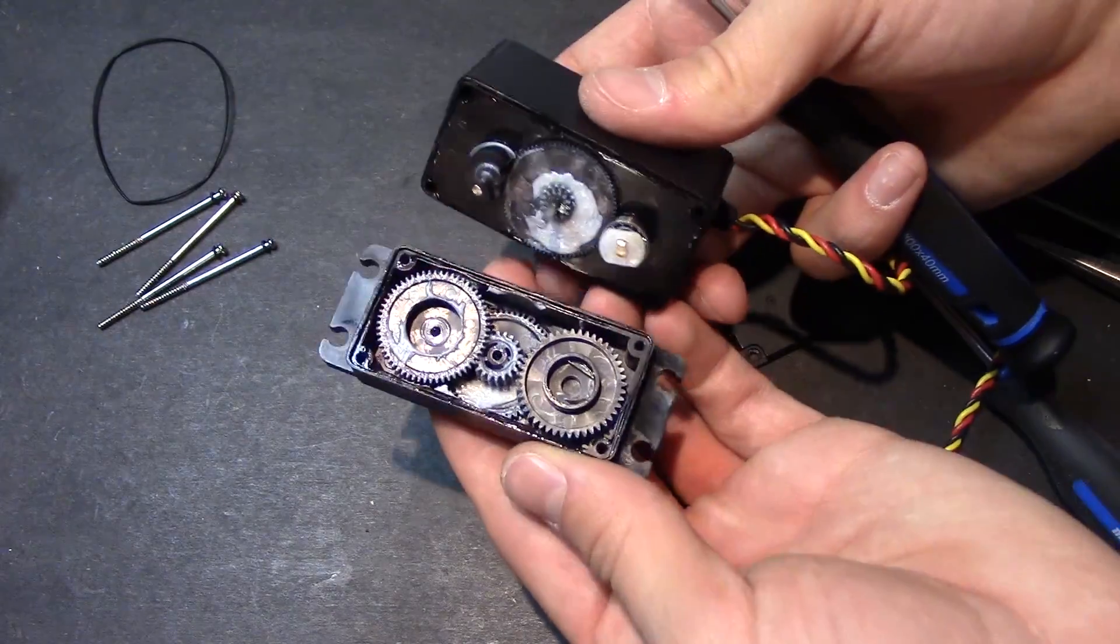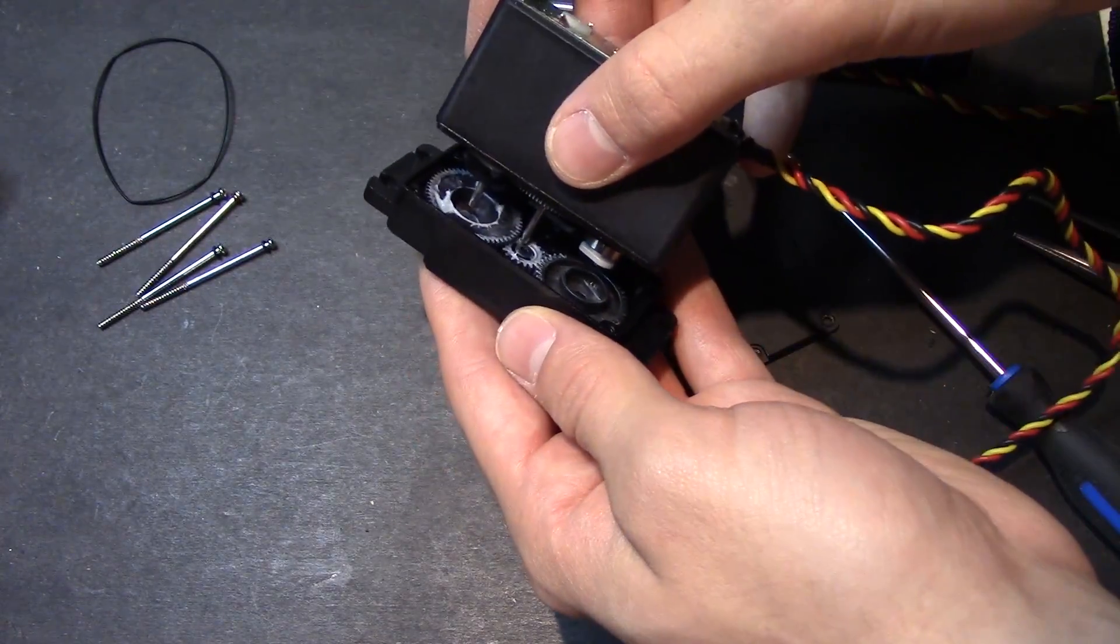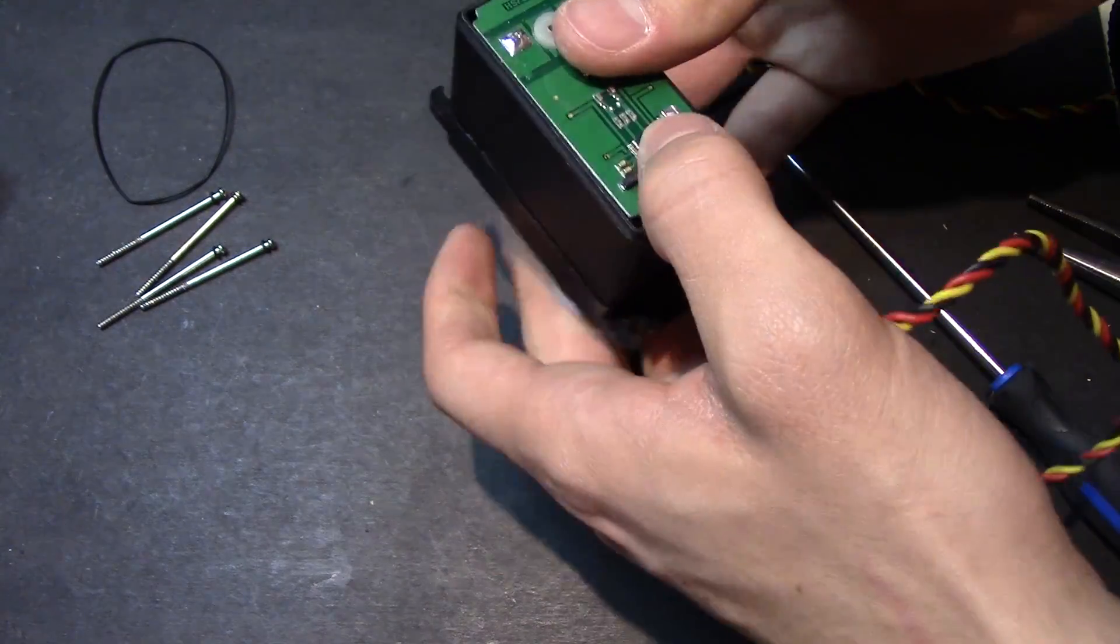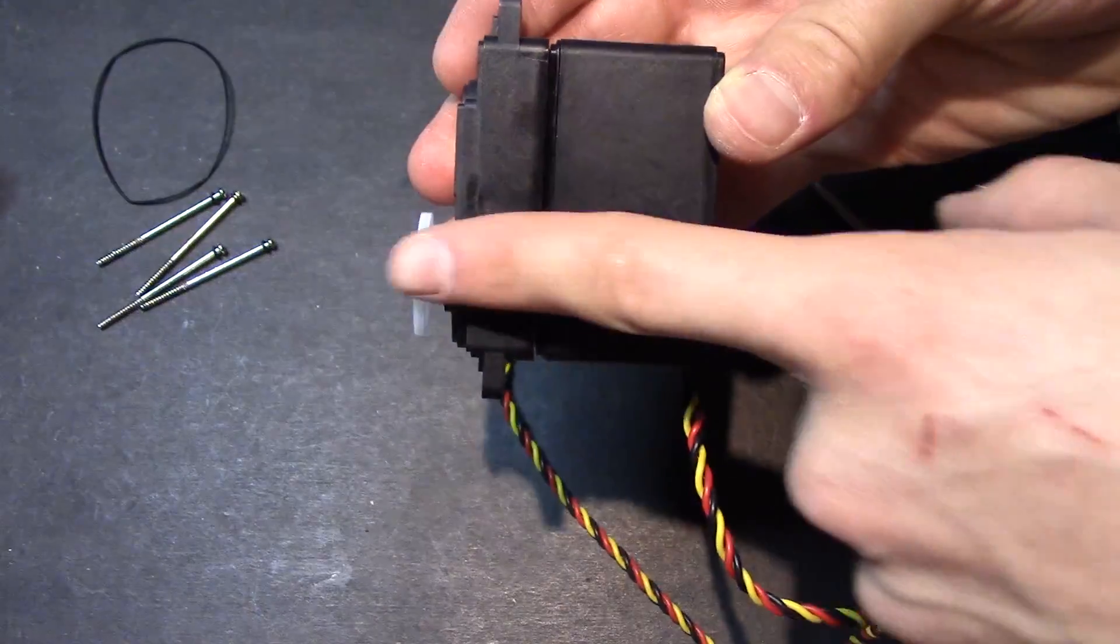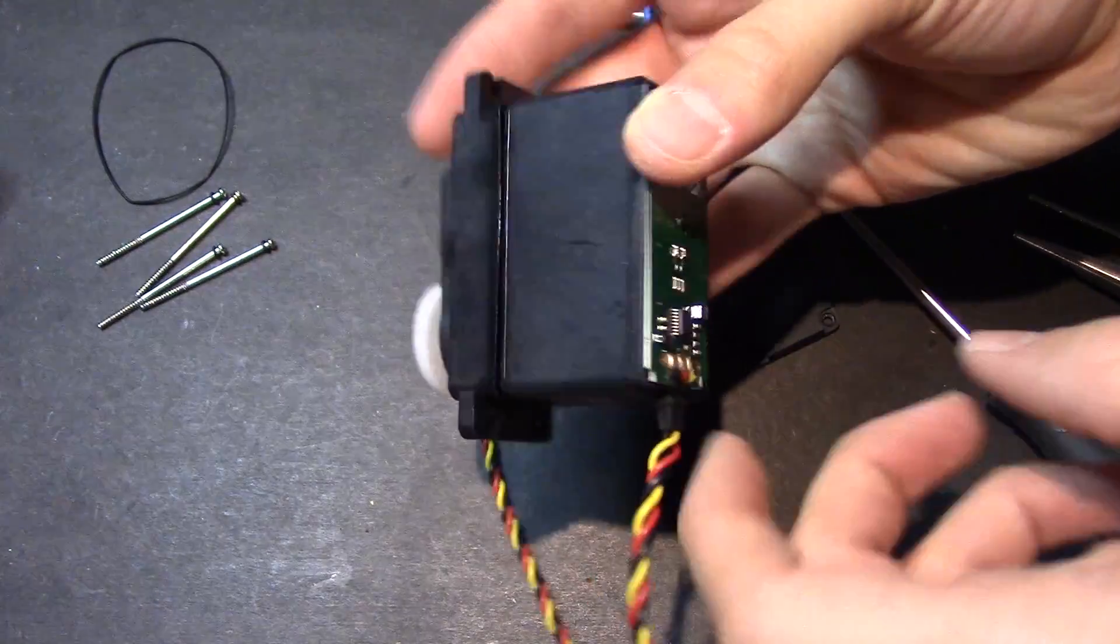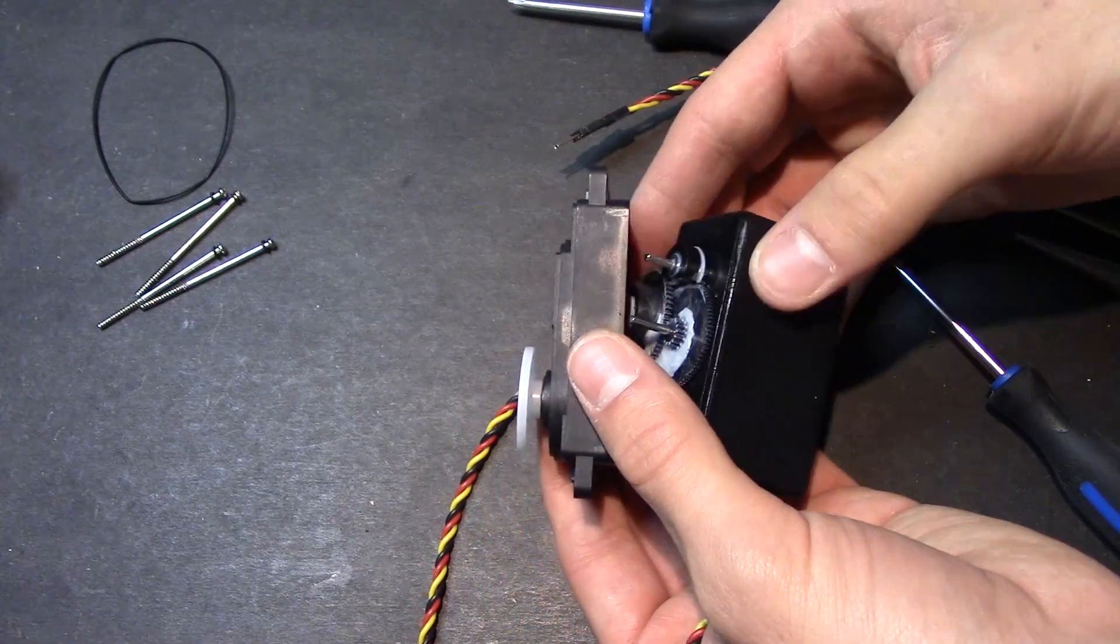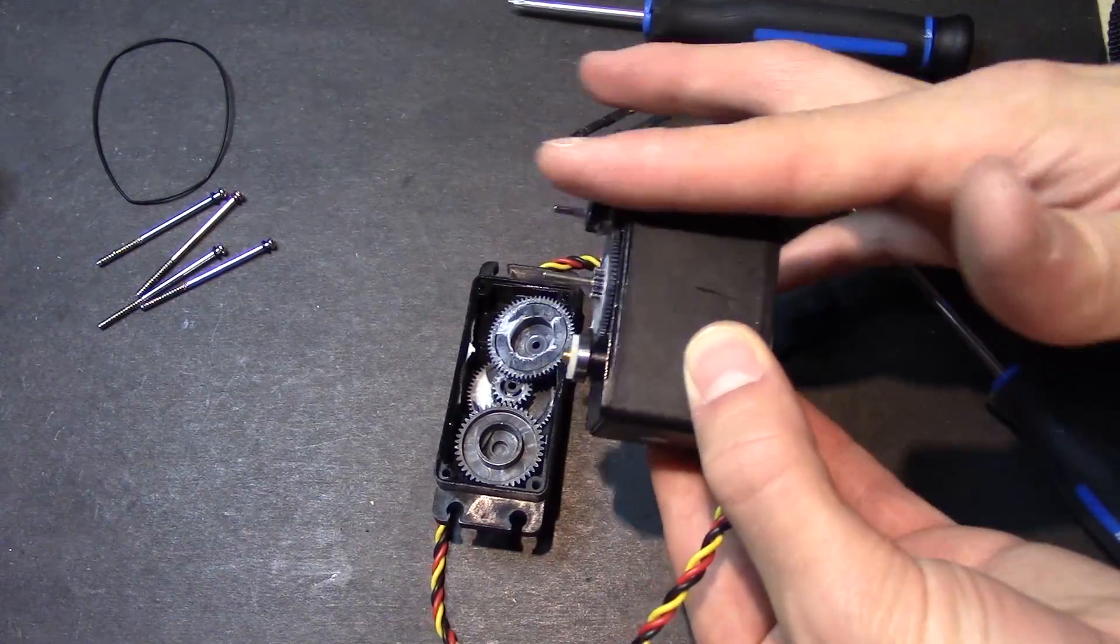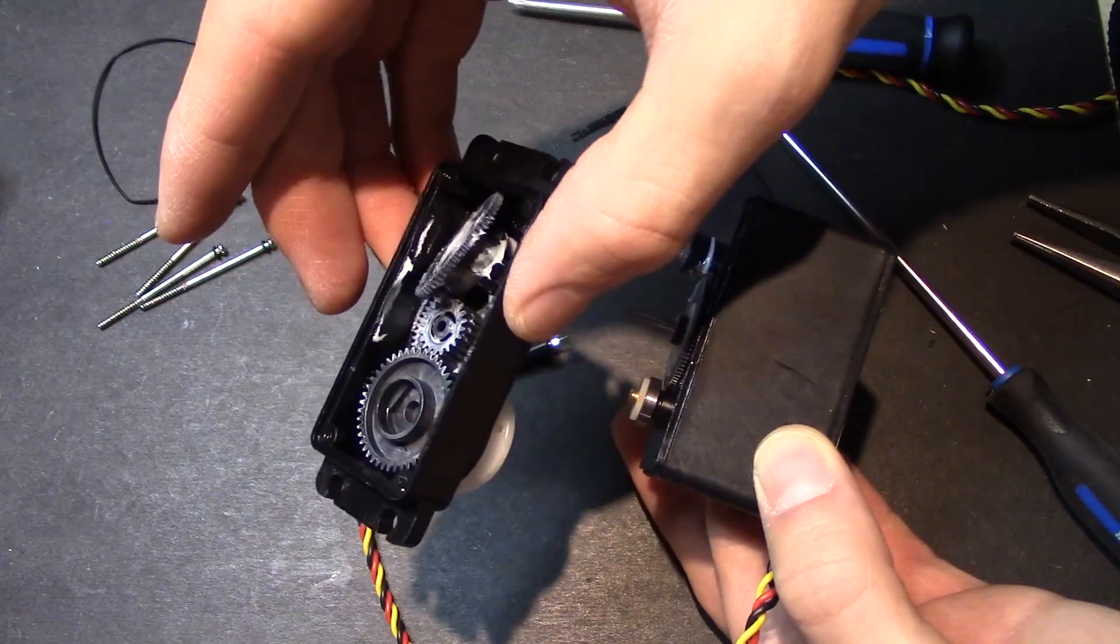And there's the mechanical assembly of the servo. So if I just put that back on non-destructively, you could see that the output shaft is right here. And I think the actual motor, I'm making a mess, is going to be right here. But look at that. It's all geared inside there.